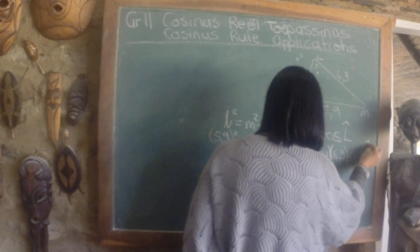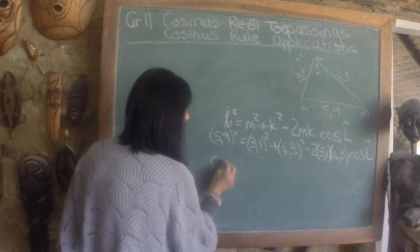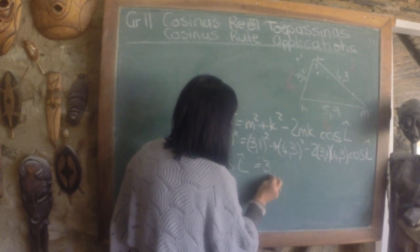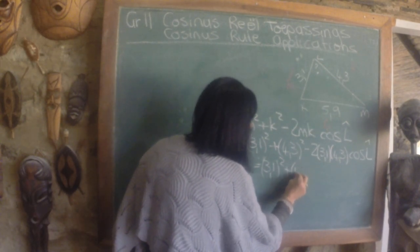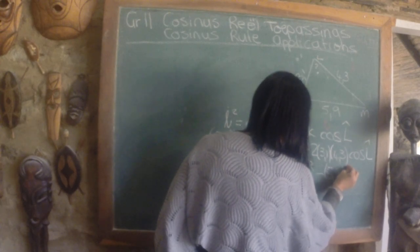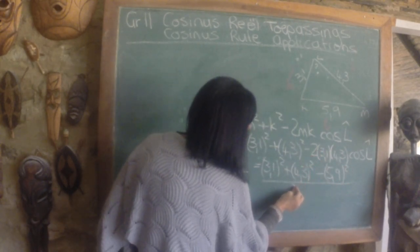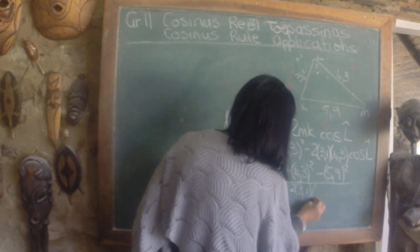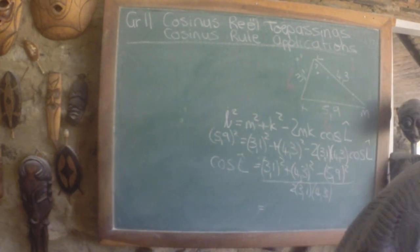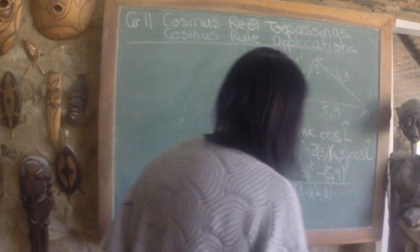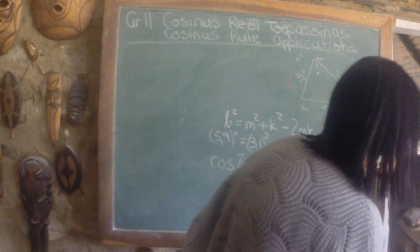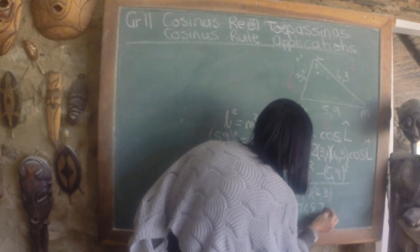minus 2 M times K. So now we're going to do exactly the same thing, we're going to get cos L alone on this side. So here's 3.1 square plus 4.3 square plus 4.3 square and then we divide this with 2 times 3.1 times 4.3 and then we get our answer as minus 0.25.